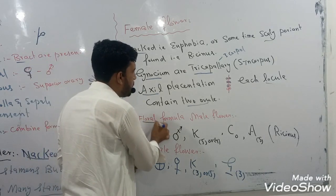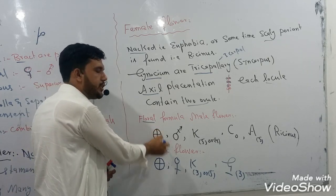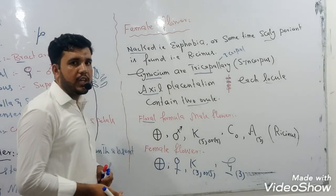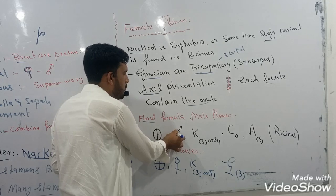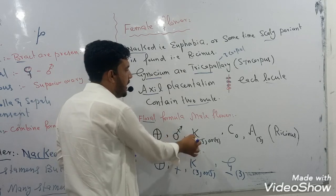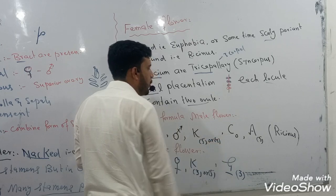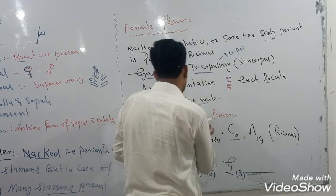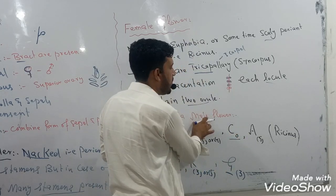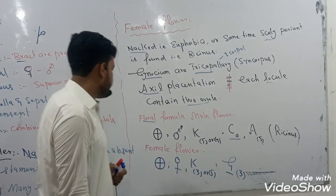Coming to the floral diagram for the male flower: the flower is actinomorphic, which means it can be cut into more than one equal half. They have only the male part — stamens. The calyx, when found, has five or four members. The corolla is absent in the male flower. The androecium has five fused stamens in the case of Ricinus.